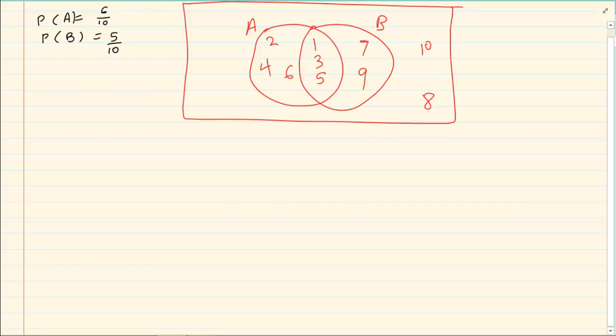Now what if I was asking you, what is the probability of A or B? What you notice is I am asking what is in all of this? Now if you were to count, we've got 1, 2, 3, 4, 5, 6, 7, 8. So it would be 8 over 10.